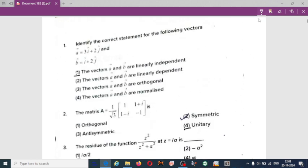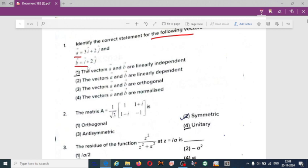Identify the correct statement for the following vectors. Here they have given two vectors: A equal to 3i plus 2j cap and vector B equal to i cap plus 2j cap. This question was actually asked in the GATE exam previous year, 2012. That's why you need to solve the previous year question papers. If you solve this matrix problem for the given vectors A and B, the vectors A and B are linearly independent, so option one is correct.